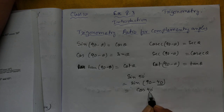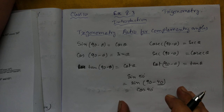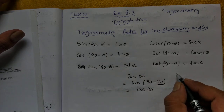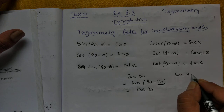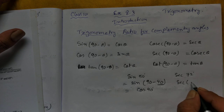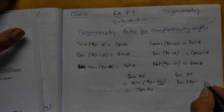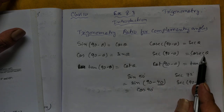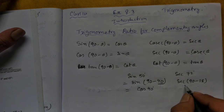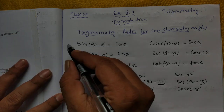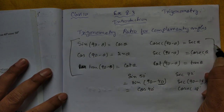So sin(90° − 40°) = cos 40°. That's how we write it. Another example: sec 72°. It can be written as sec(90° − 18°), since 90 minus 18 is 72. Using the formula sec(90° − θ) = cosec θ, where θ = 18°, this becomes cosec 18°.